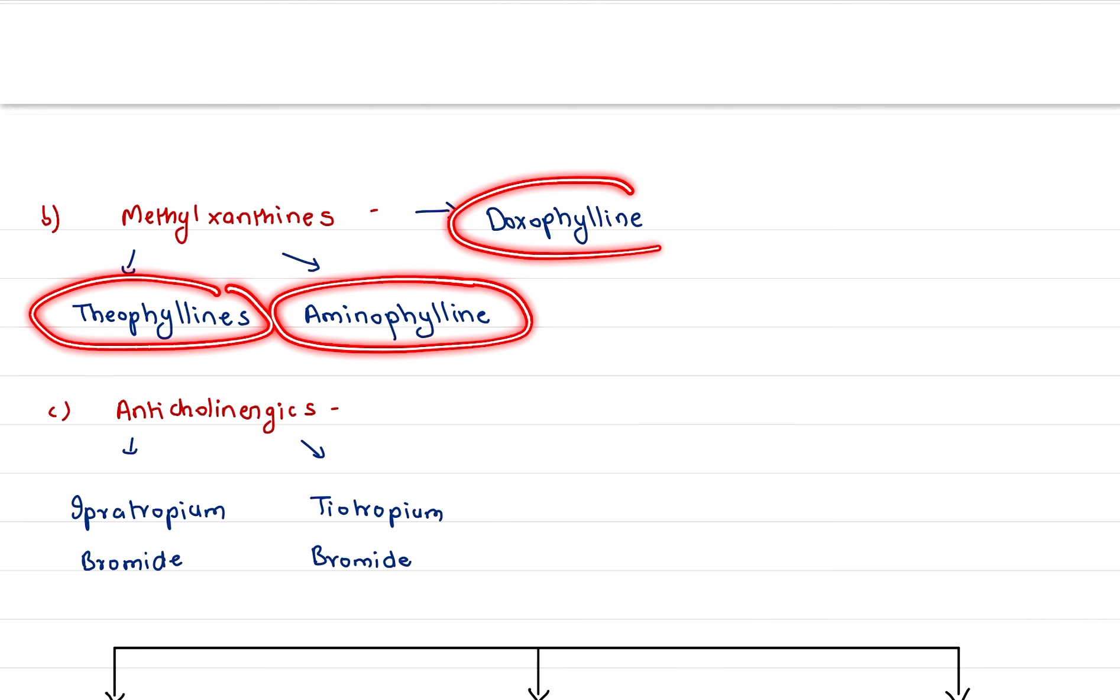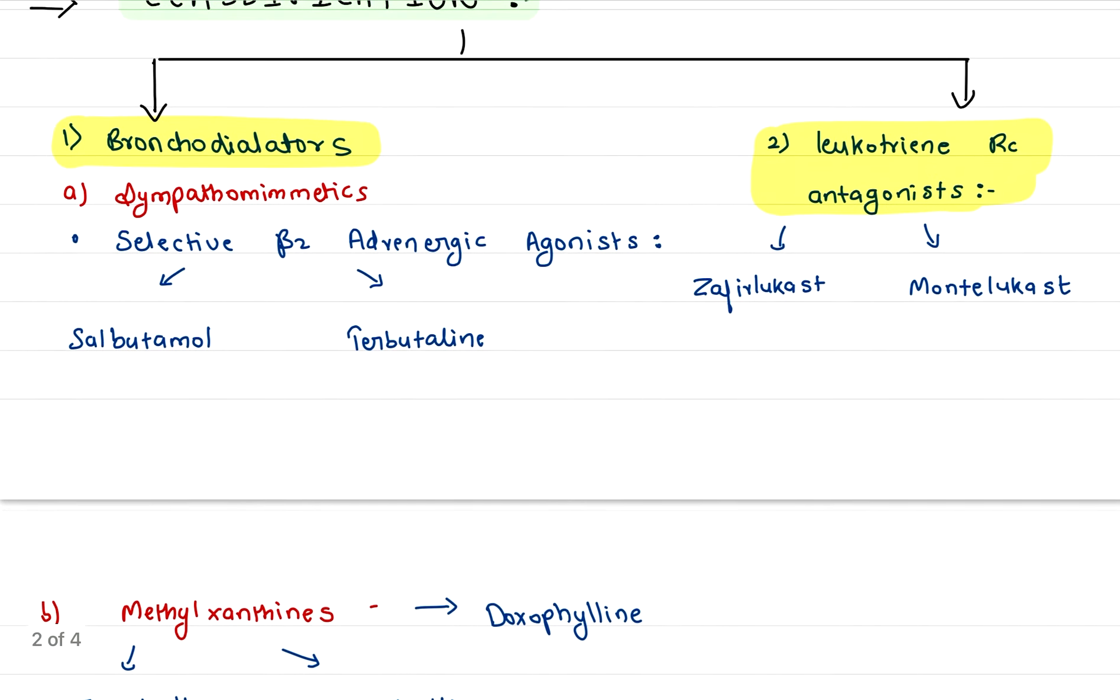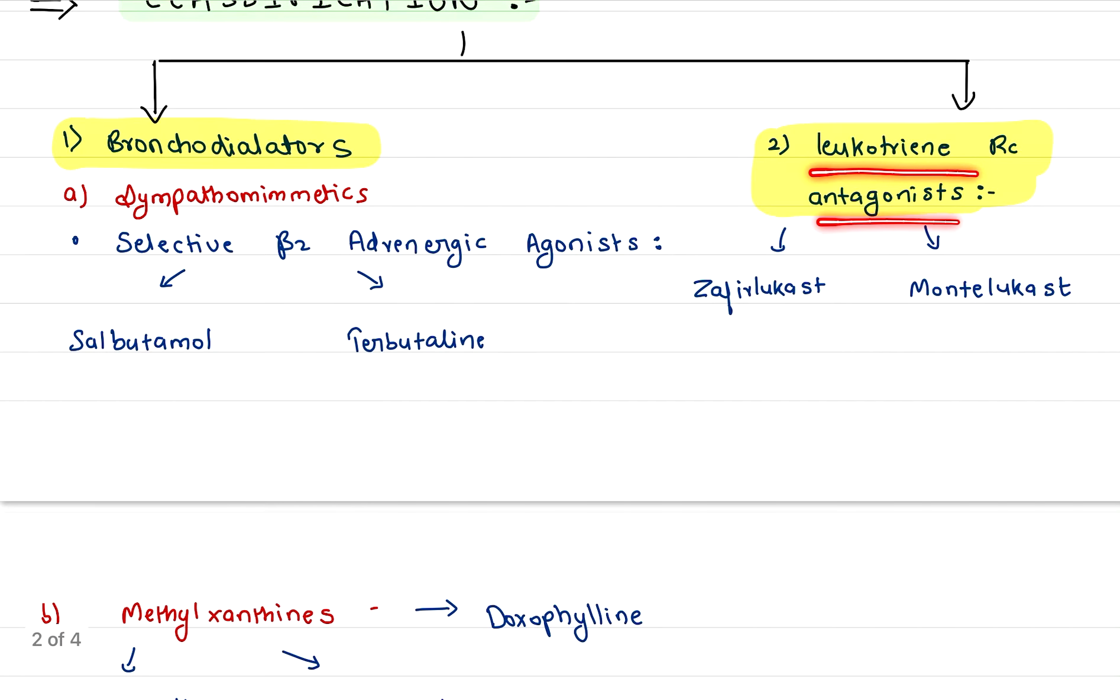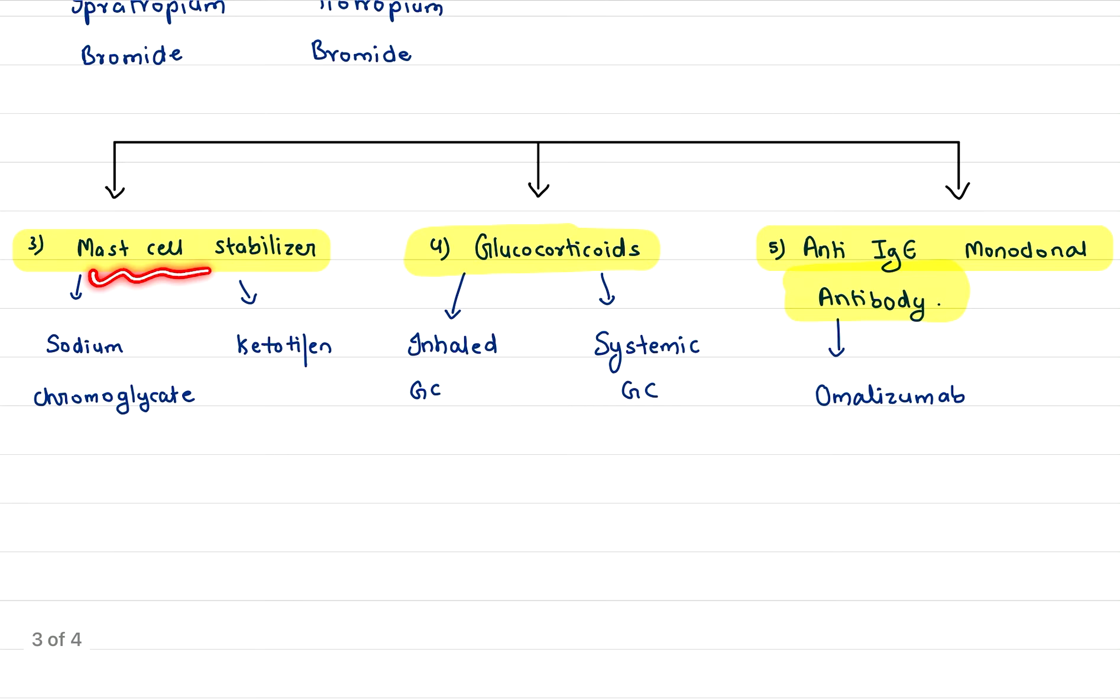Under anticholinergics, we have ipratropium bromide and tiotropium bromide. For leukotriene receptor antagonists, we have zafirlukast and montelukast. For mast cell stabilizers, we have sodium cromoglycate and ketotifen.